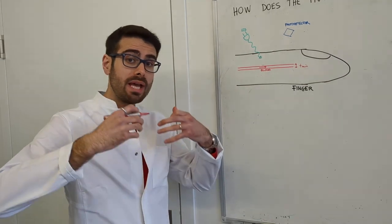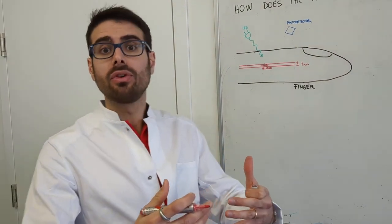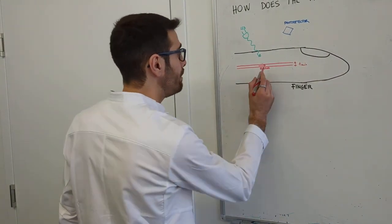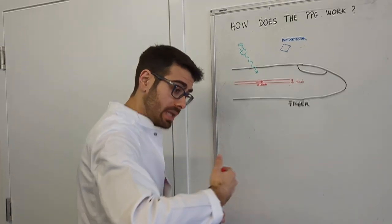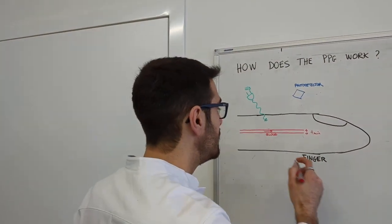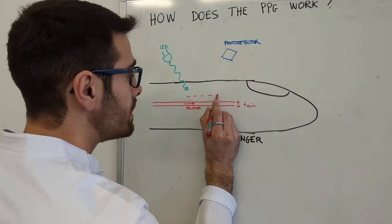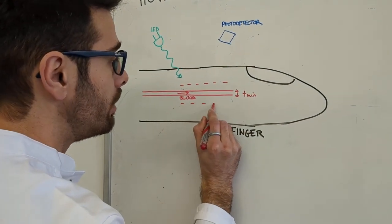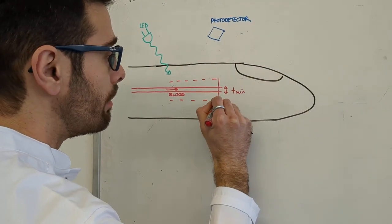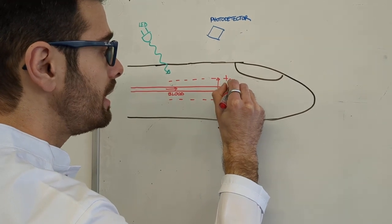When a big pressure wave comes from the heart, there will be a blast of blood that will be propagating through the artery, and then the thickness of this artery will be changing, moving from T-min to what we call T-max.